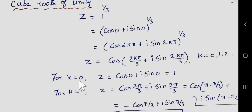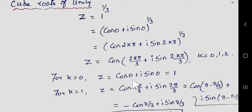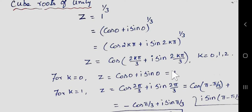Now let us see the cube roots of unity. For k = 0, z = cos 0 + i·sin 0, which is equal to 1.